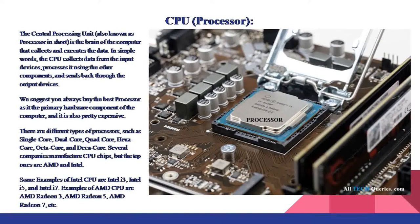We suggest you always buy the best processor as it is the primary hardware component of the computer, and it is also pretty expensive. Several companies manufacture CPU chips, but the top ones are AMD and Intel. Some examples of Intel CPUs are Intel i3, Intel i5, and Intel i7. Examples of AMD CPUs are AMD Radeon 3, AMD Radeon 5, etc.